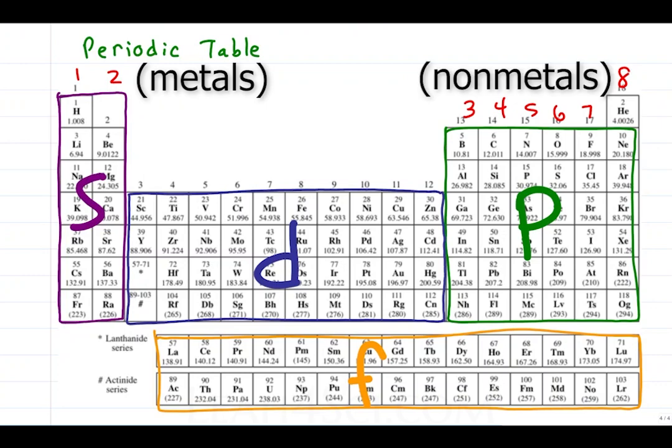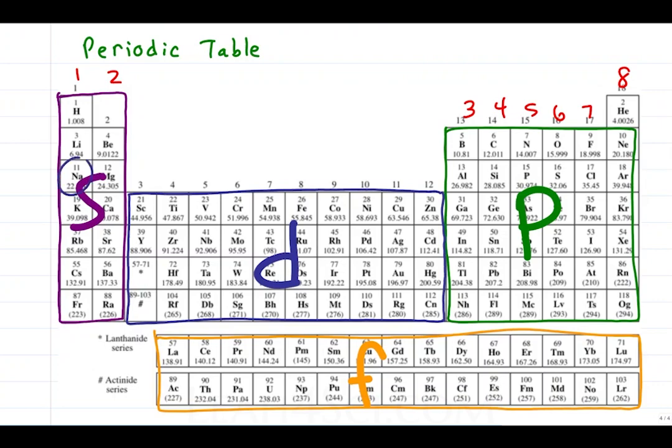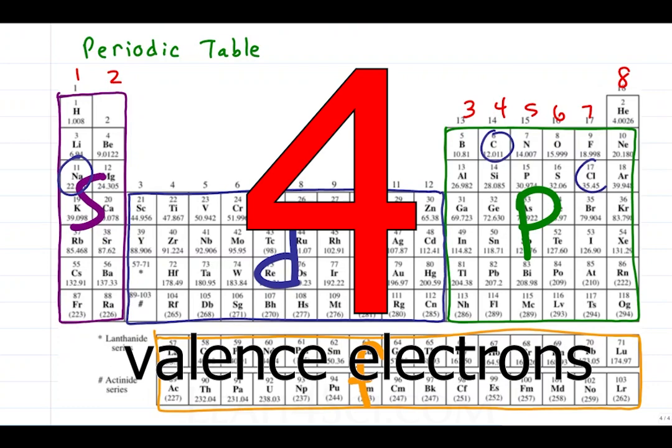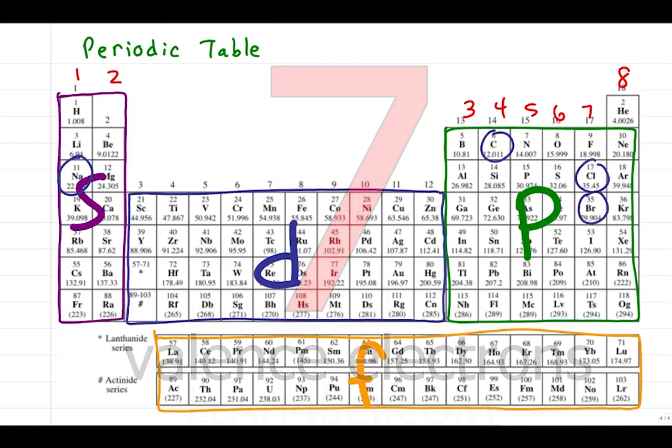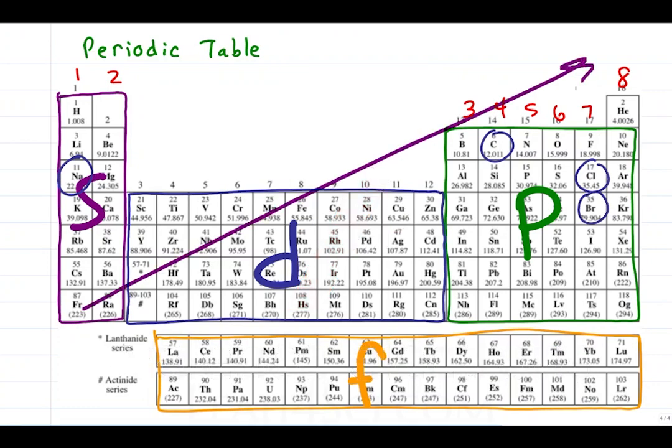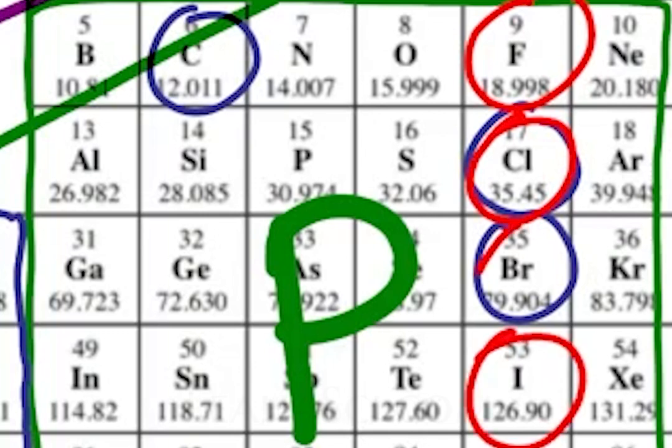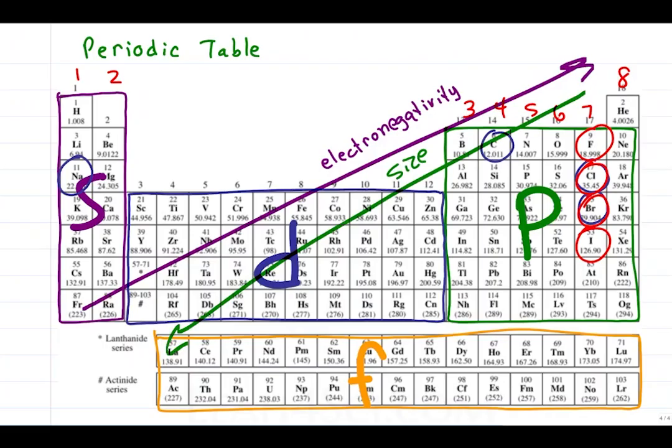This also tells us the number of valence electrons, which is how you will know that sodium has 1 valence electron, carbon has 4, and the halogens have 7. The table also shows you some trends. The two trends to remember are that electronegativity increases up and towards the right, and size increases down and towards the left. This tells me that fluorine is more electronegative than chlorine, while iodine is larger than bromine.